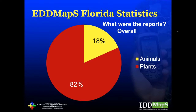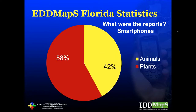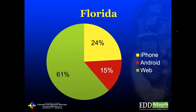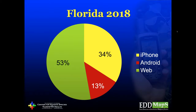We looked at data coming into Florida comparing plants to animals — it was about 80-20 with plants versus animals. When you switch to smartphones, that starts to change and you see a lot more animal reports through the smartphone than through the web, likely due to the convenience of reporting. However, it's still a lot of people reporting through the web, and over the next six months we're going to work on improving that web interface. That number of web users is starting to decrease, but there's still a good number of them.